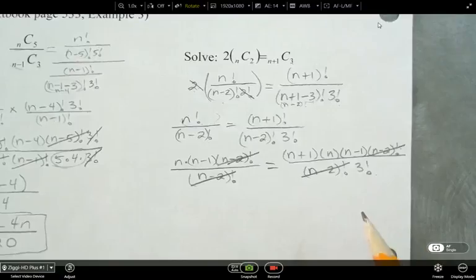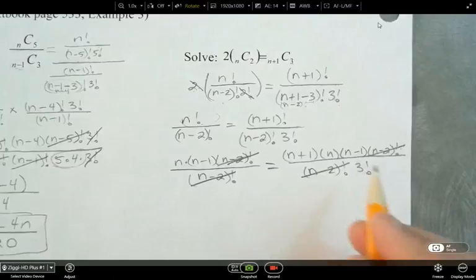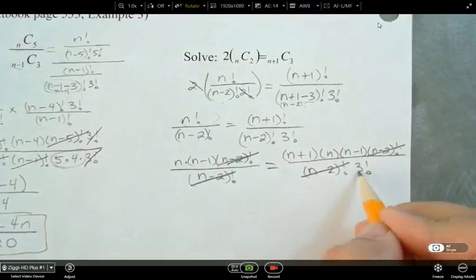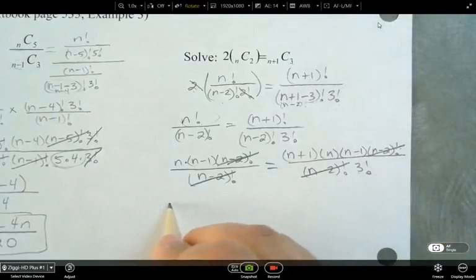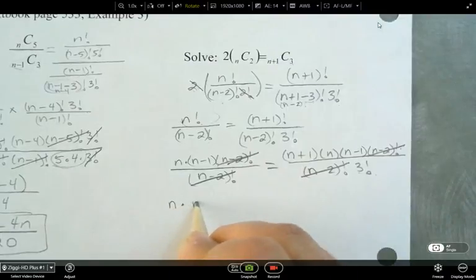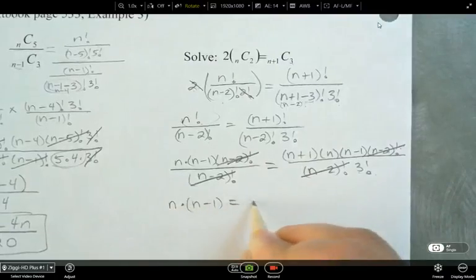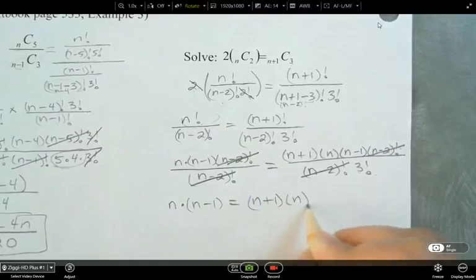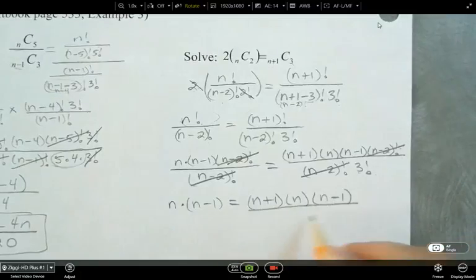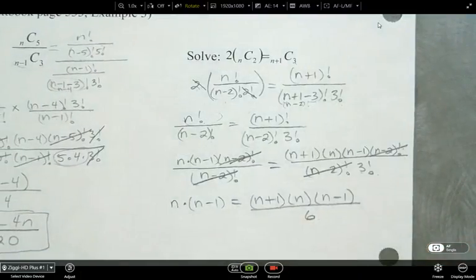So now, so what do we have so far? So let's write out what we've got simplified. What is 3 factorial evaluated? This actually is 6. So is it okay if I write 6 in my next step for that? So n times n minus 1 equals n plus 1, n, n minus 1. And this is divided by 6.